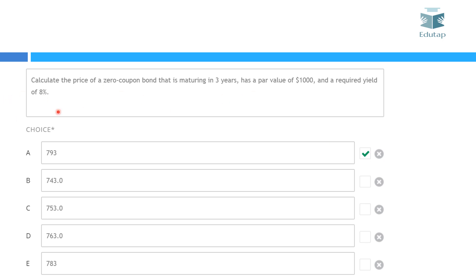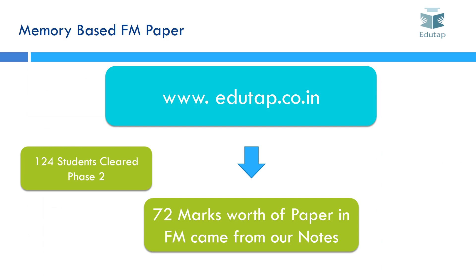Then there was a numerical on zero coupon bonds — this was also very easy; just put the values into the formula and you would have been able to calculate the answer. We have also made a memory-based FM paper which can be accessed on our website www.edutab.co.in. We would like to emphasize that 72 marks worth of paper in FM came from our notes, and 124 students who enrolled in our courses cleared the Phase 2 exam in 2017.